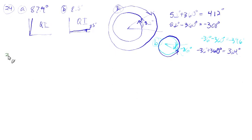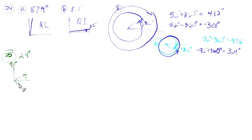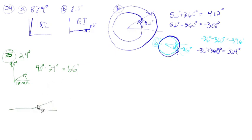Next, number 35: they give us 24 degrees and want the complement and supplement. For the complement, two angles add up to 90°. Take 90 minus 24 — that's 66 degrees. That's the complement. For the supplement, they add up to 180°. Take 180 minus 24 — that's 156 degrees. So 24° and 156° are supplementary.